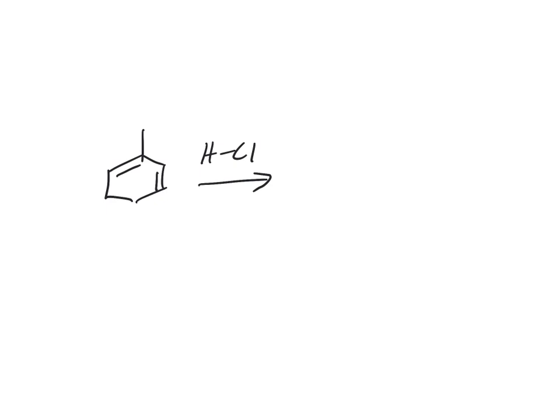So we've got to choose between these pi bonds, so let's number them 1, 2, 3, 4. Which pi bond, when it reacts, is going to give us the most stable carbocation? The pi bond between 1 and 2, or the pi bond between 3 and 4?